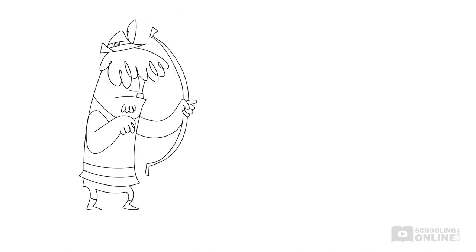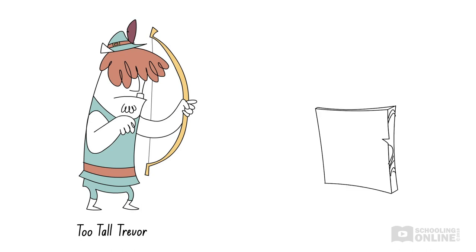This is just like one of Robin Hood's competitors, Too Tall Trevor. Too Tall Trevor is simply too tall, and he makes the mistake of forgetting to adjust for his height when firing his arrow. So, unfortunately, all of his arrows land above the bullseye.